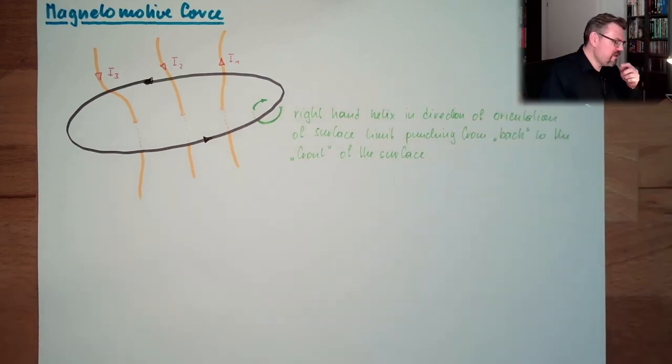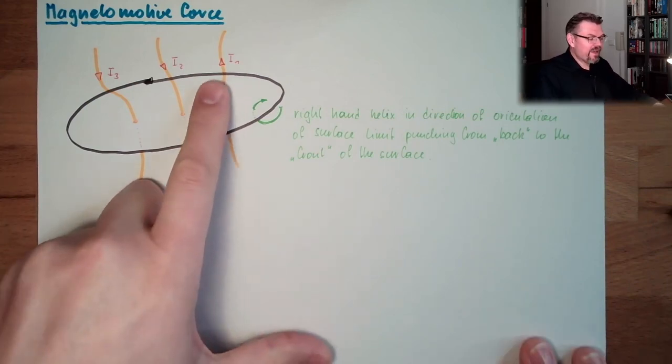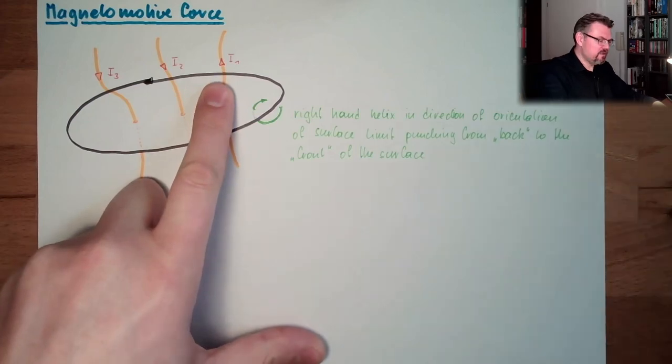What it now appears, we are looking at, is the front and below would be the back, punching from back to the front of the surface. So indeed, if I give the surface limits an orientation, then I define where is back and where is front.